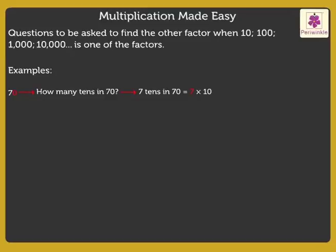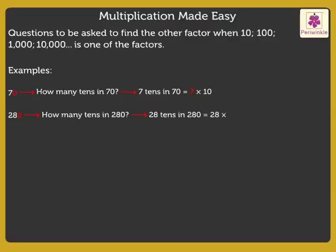Now, let us try another number: two-hundred-eighty. There is one zero in two-hundred-eighty, so ten is one of the factors. The question we ask to get the other factor is: how many tens in two-hundred-eighty? There are twenty-eight tens in two-hundred-eighty, which is equal to twenty-eight into ten. So, the other factor is twenty-eight.